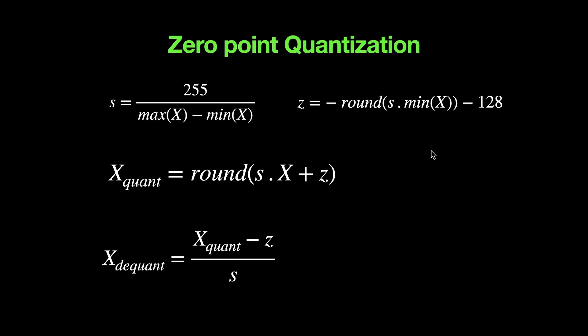For zero point quantization, we compute both the scale and the zero point. The scale is computed as the range (max minus min of the input) blown up to 255. The zero point is calculated using the scale multiplied by the min value of x, minus 128, and then negated. The quantized values are the product of the input with the scale factor plus the zero point, all rounded off. De-quantization is the reverse.